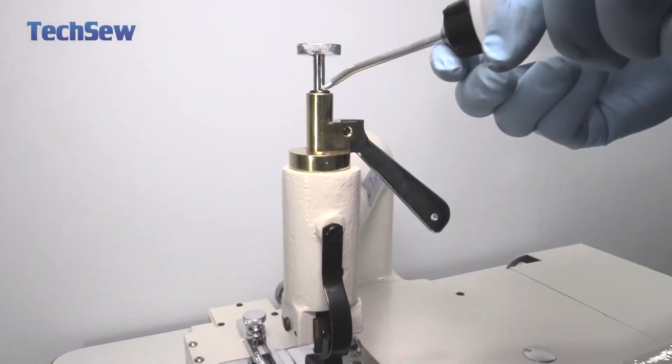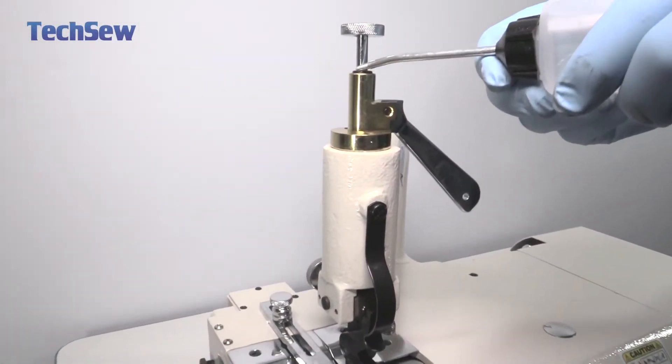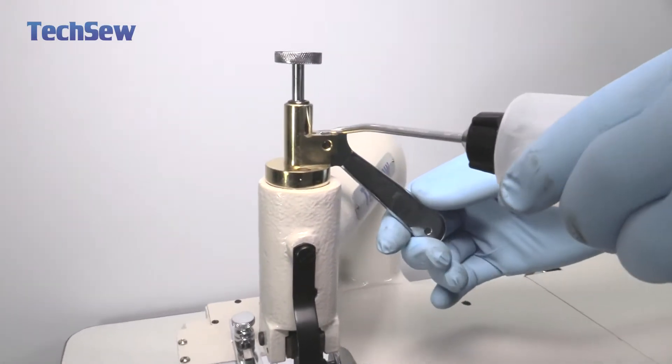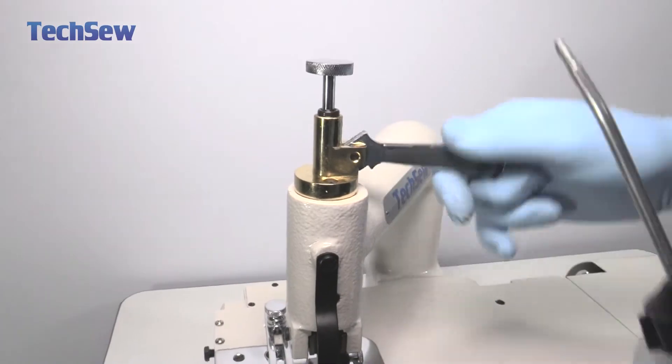First part you have to oil is the threads right over here. Also the outer black slide. The pivot over here for the up and down.